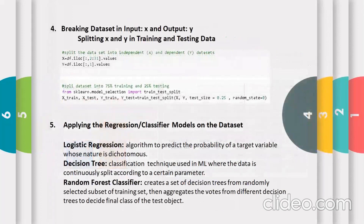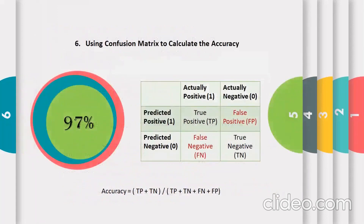Then I'll be splitting my data into independent and dependent datasets, and then I'll be applying regression or classifier models on the dataset. I'm going with three models — you can go with any of your preferences. I will be using logistic regression, decision tree, and random forest classifier. There are tons of models to choose from, but how do we decide which one works the best for our data?